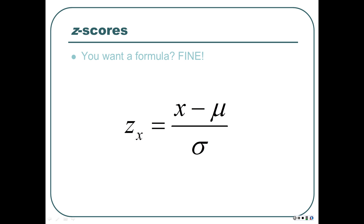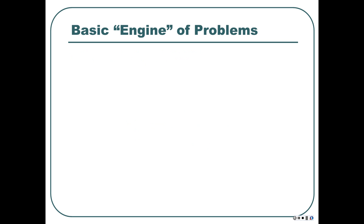It's saying how many standard deviations is this raw deviation, this raw distance. It's an easy little formula. Z-scores work with any distribution, whether it's skewed or normal or crazy-shaped or whatever.